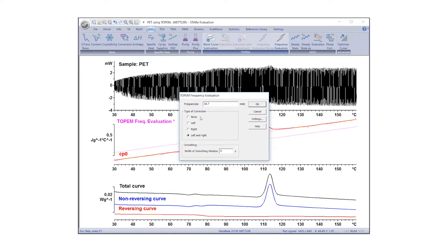Under Type of Correction, select Left and Right to compensate for the frequency dependence caused by the heat transfer to the sample. Further information about these types of corrections can be accessed from the Help menu.